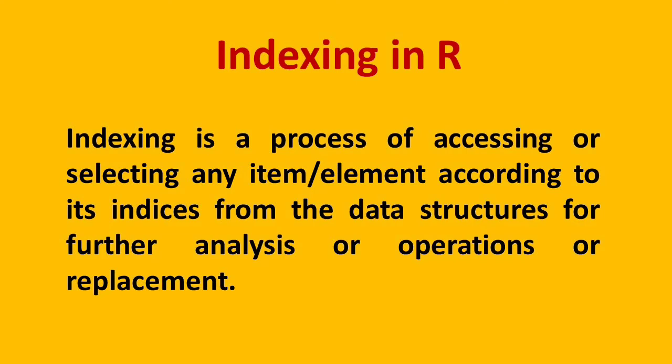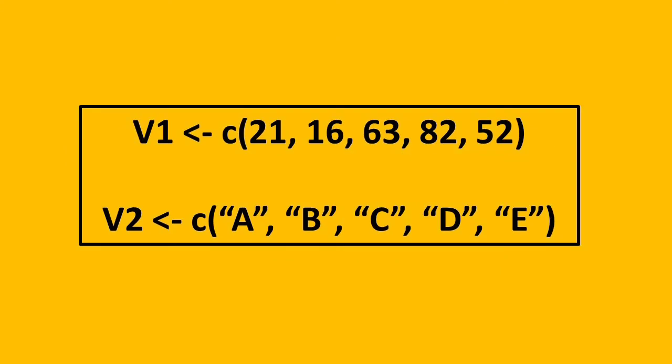Now, with the help of example, I'll explain the indexing in R. Say for example, we have two vectors v1 and v2. v1 is a numeric vector, v2 is a character vector, and both have five elements stored in it.